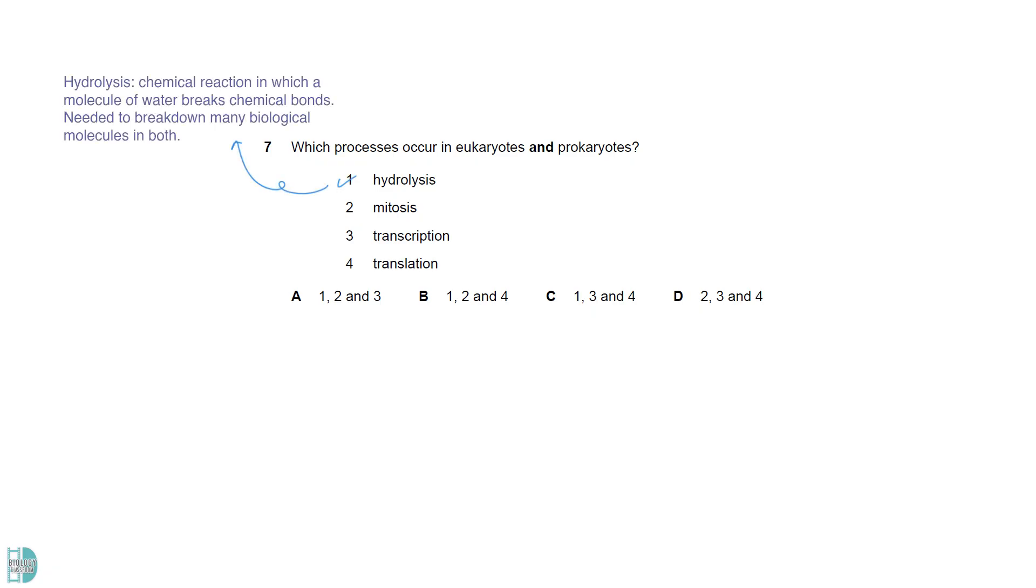Hydrolysis is a chemical reaction in which a molecule of water breaks chemical bonds. It is needed to break down many biological molecules and occurs in both types of cells. Mitosis is a type of nuclear division. Prokaryotes do not have a nucleus, so they do not carry out mitosis. Both cells need to produce proteins, so transcription and translation must occur.